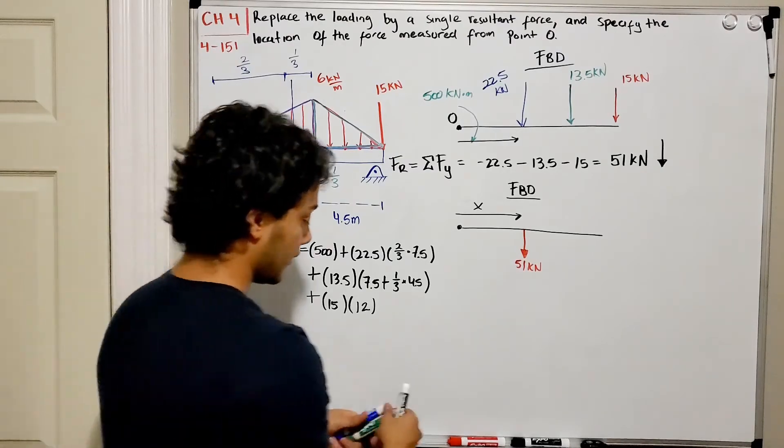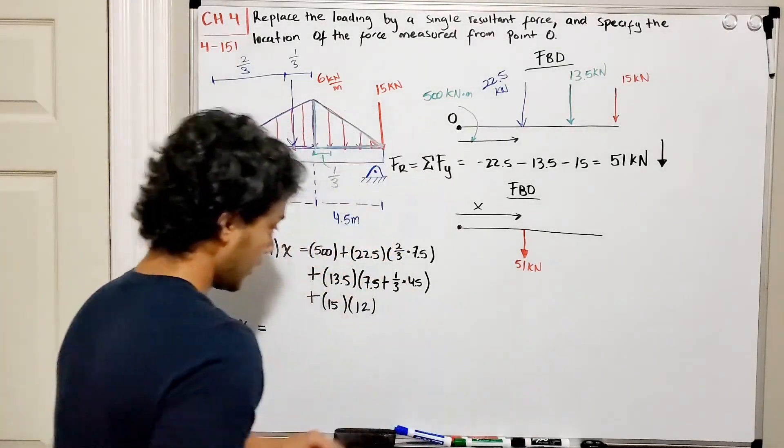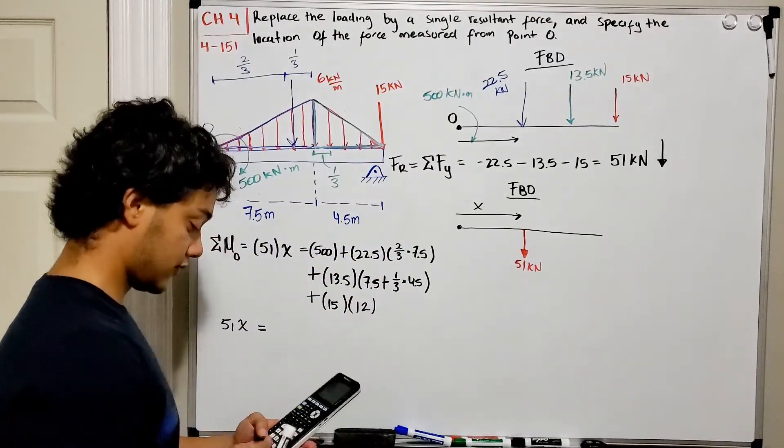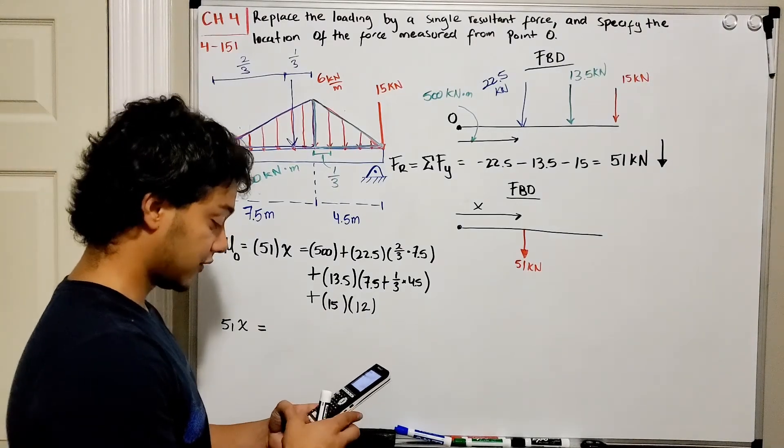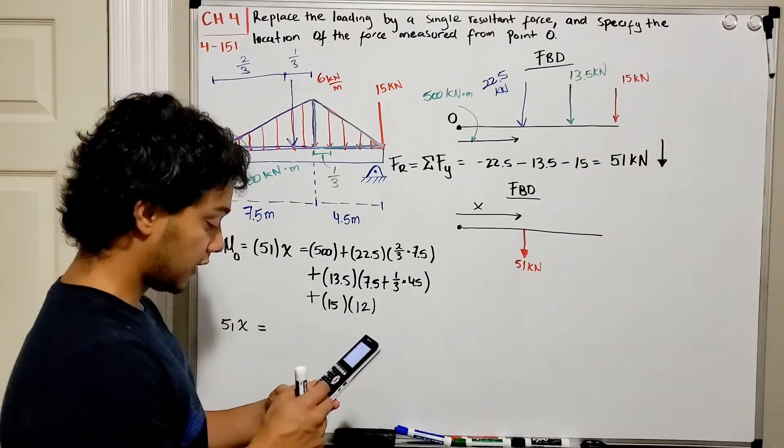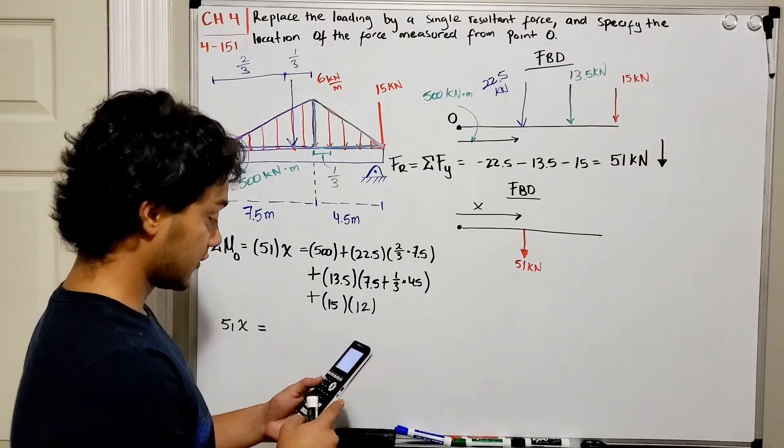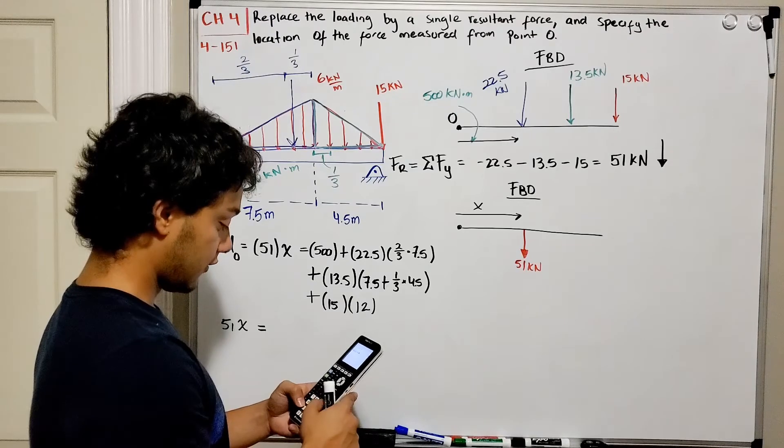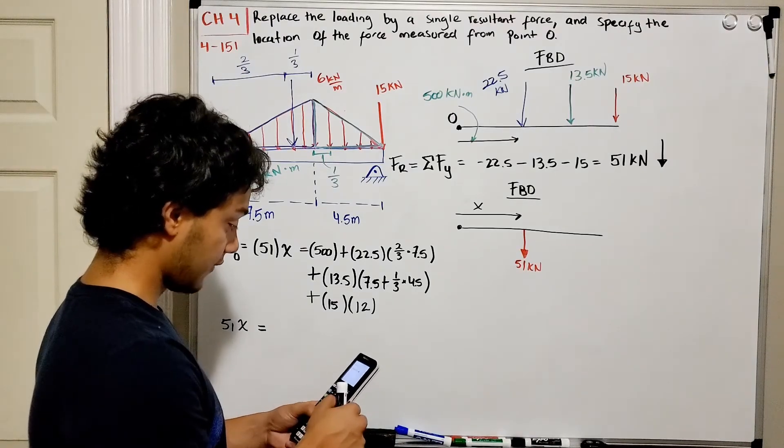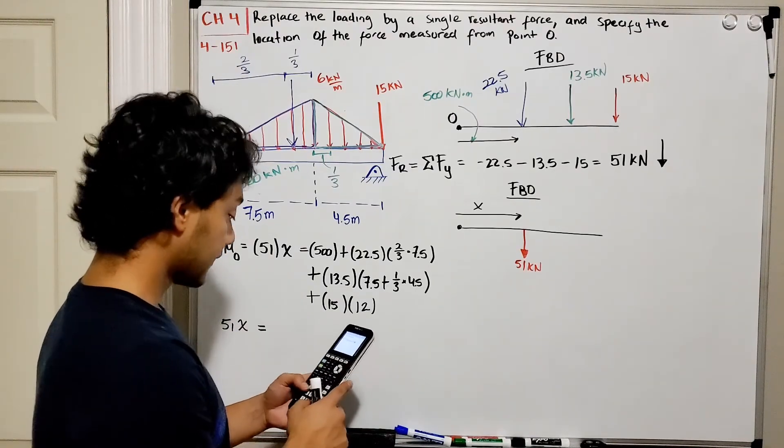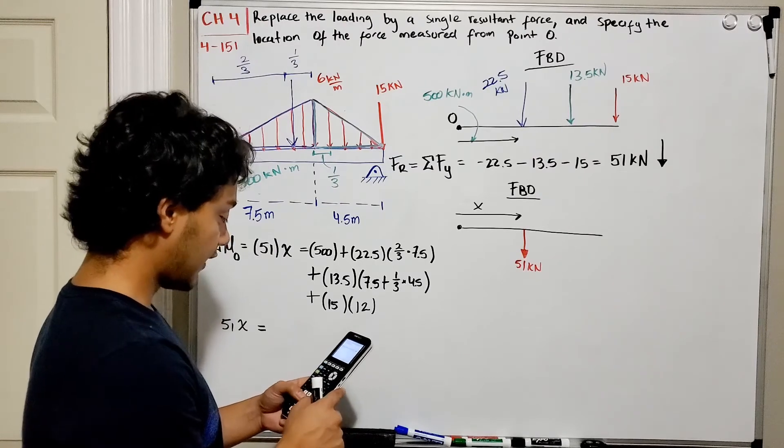So 51x is equal to, we're gonna take our calculator and we're gonna do 500, so we start 500 plus a multiplication between 22.5 times two-thirds of 7.5.